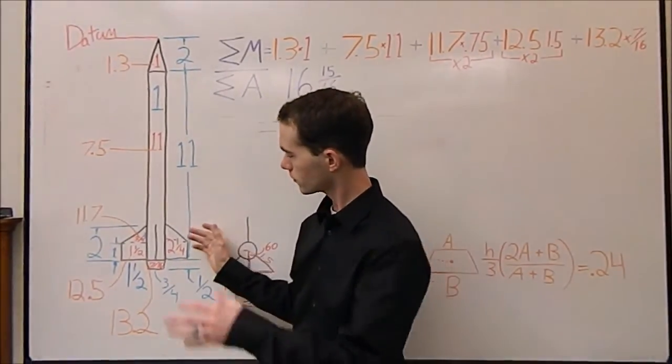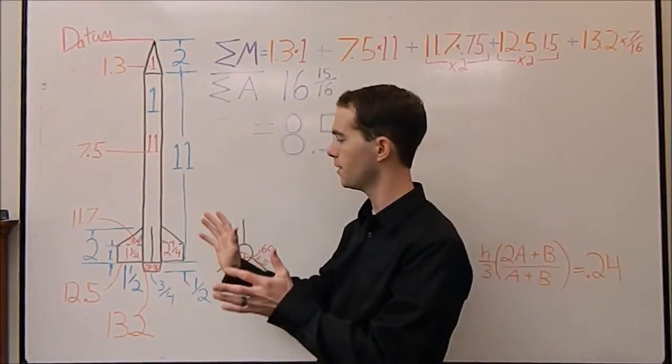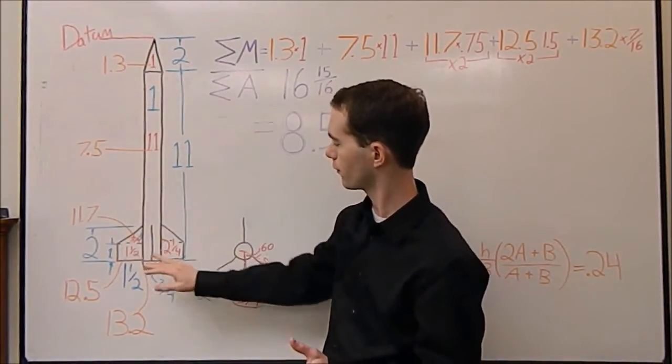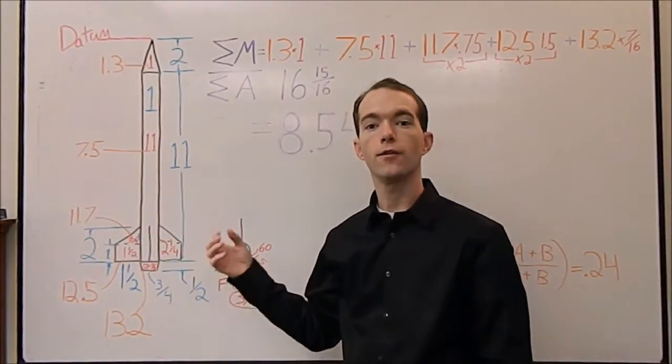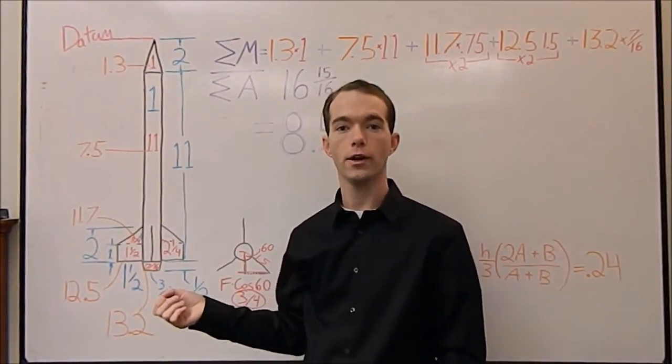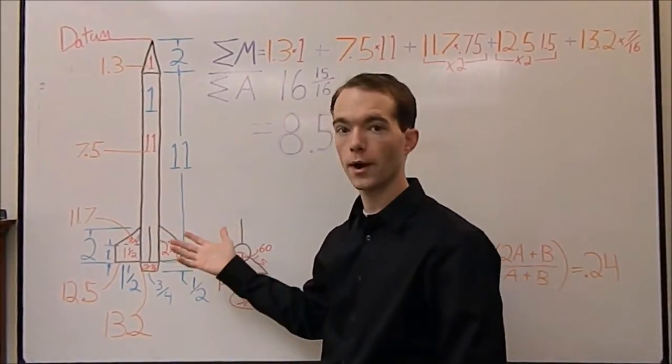So what you do is you first look at your rocket from the side, pick a side, and then you project it onto a surface. That projection has an area. If you calculate the centroid of this area you can figure out where the center of pressure of your rocket is going to be. So this is what we're doing right here.